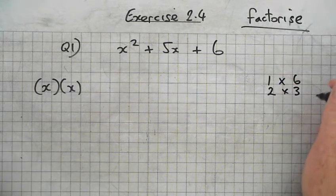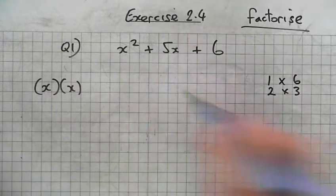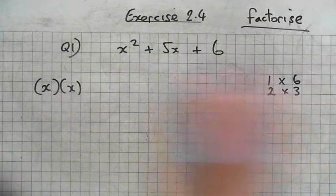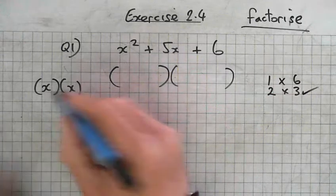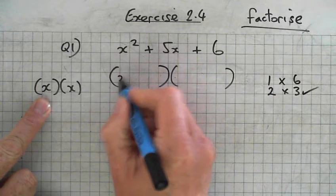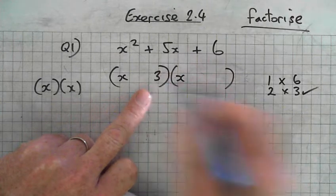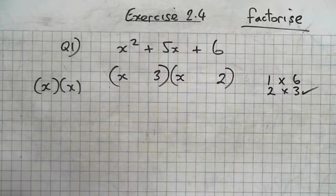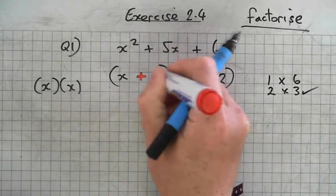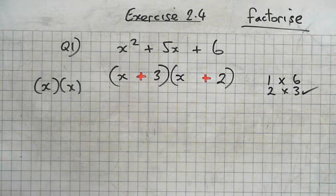The next question you ask yourself, which pair, when added, will give me 5? Added or subtracted will give me 5. 2 and 3. So we're going to use 2 and 3. So we put one of the x's here. This x goes there. And we're going to put the bigger number first. 3 and 2. How do I get plus 5? I need a plus 3 and a plus 2 to give me a plus 5.